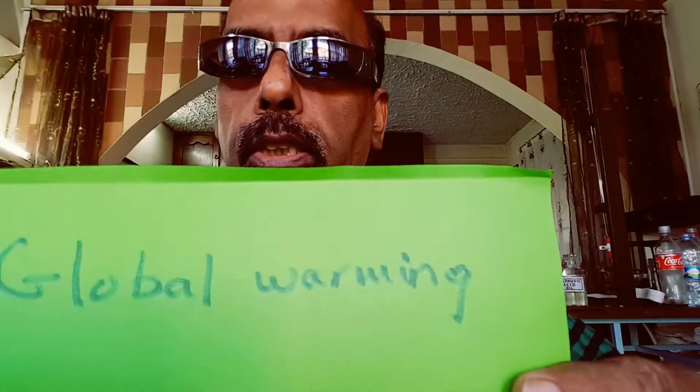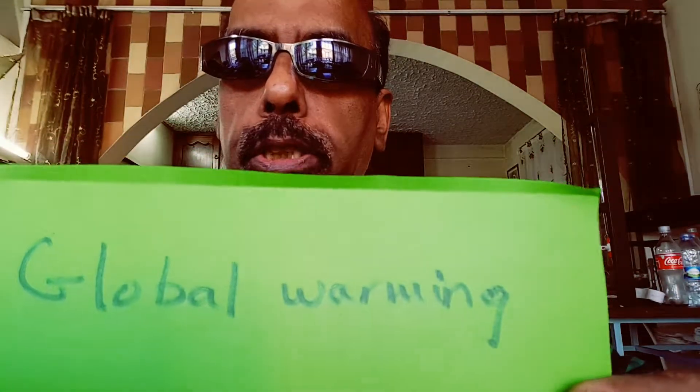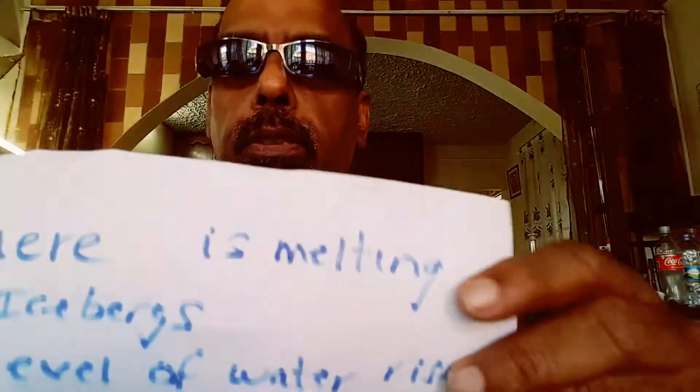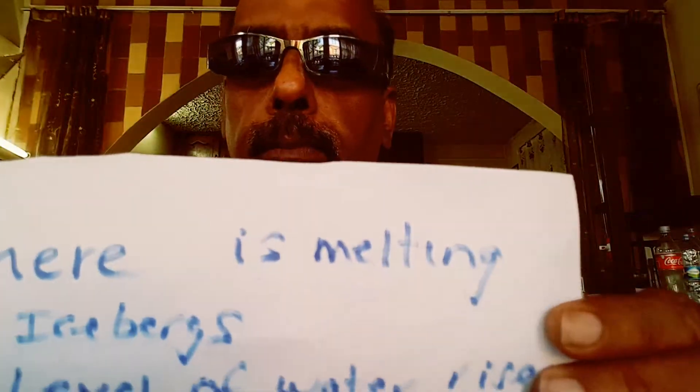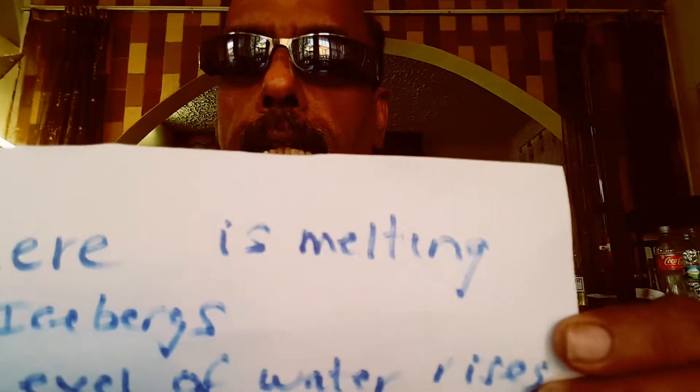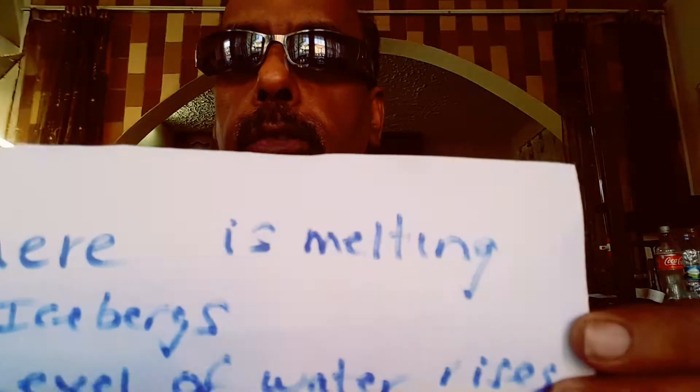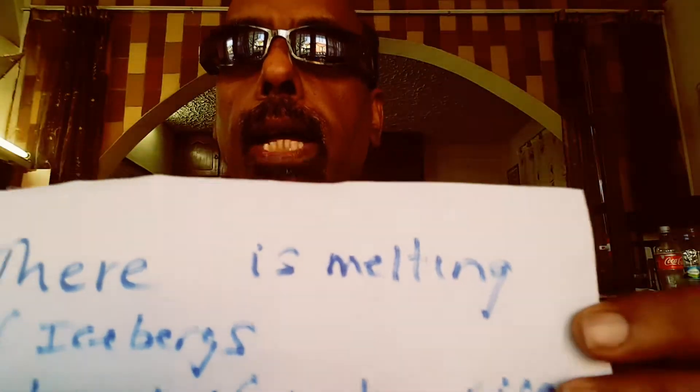Because the temperature has increased, there is melting of icebergs. Because there is melting of icebergs, the level of the sea rises and there is flooding. So this is the consequence of global warming.